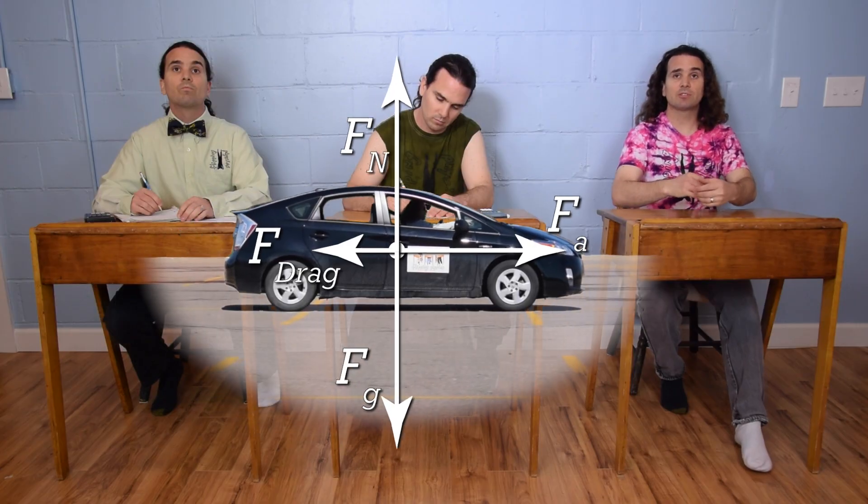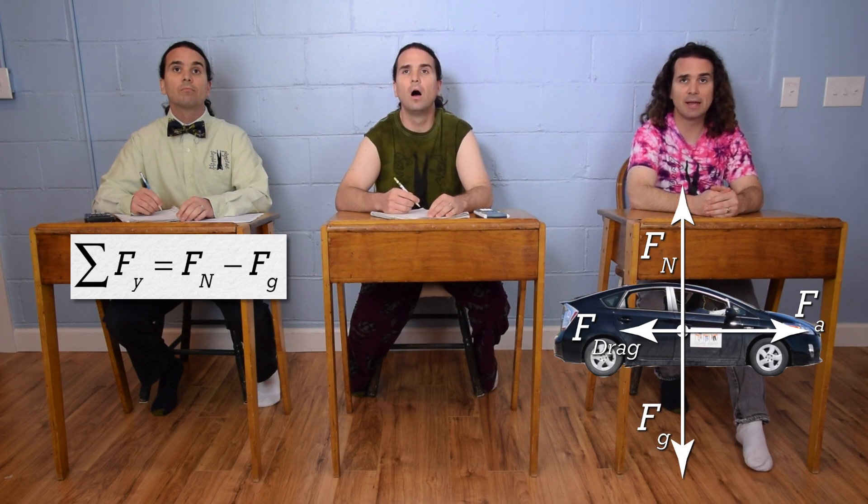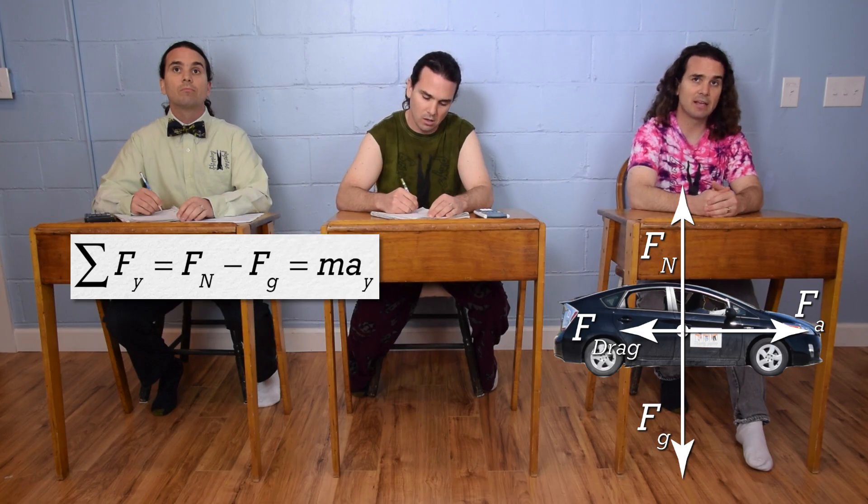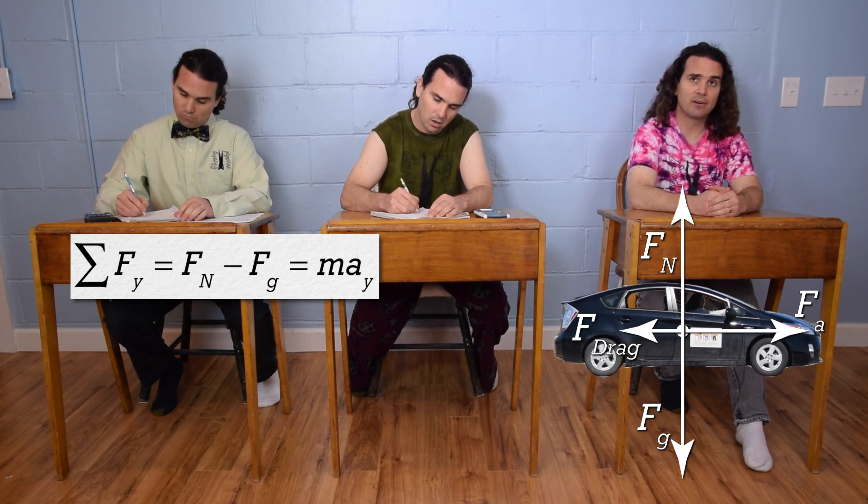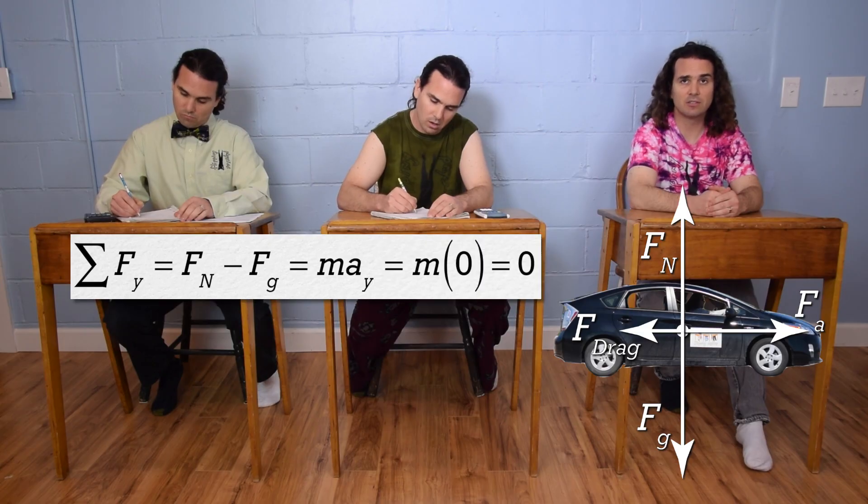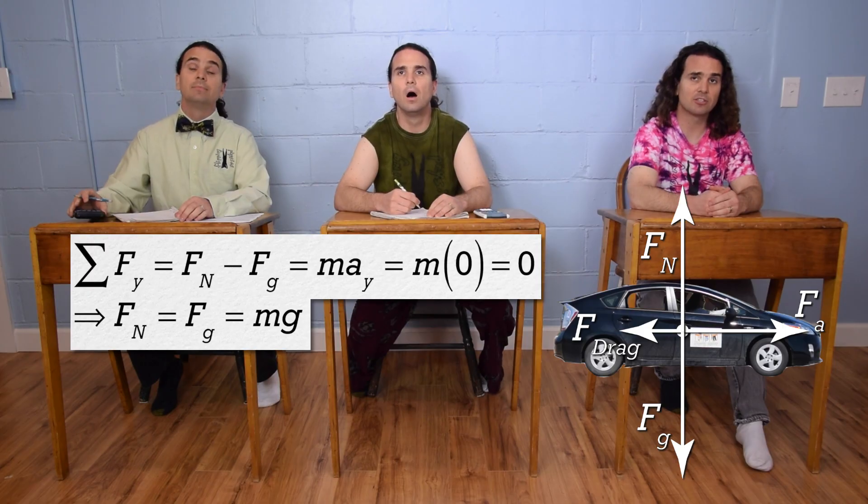And we can sum the forces in the y direction. The net force in the y direction equals force normal minus force of gravity, which equals mass times acceleration in the y direction. The car isn't moving in the y direction, so the acceleration in the y direction is zero, so the force normal equals the force of gravity, which equals mass times acceleration due to gravity.